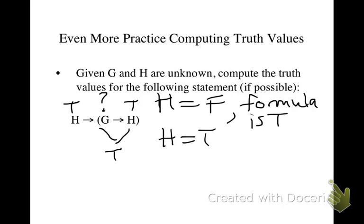Because either way, if G is false, then it's true. Or if G is true, then it's true. And then we have the antecedent is true and the consequent is true, so the formula is true.